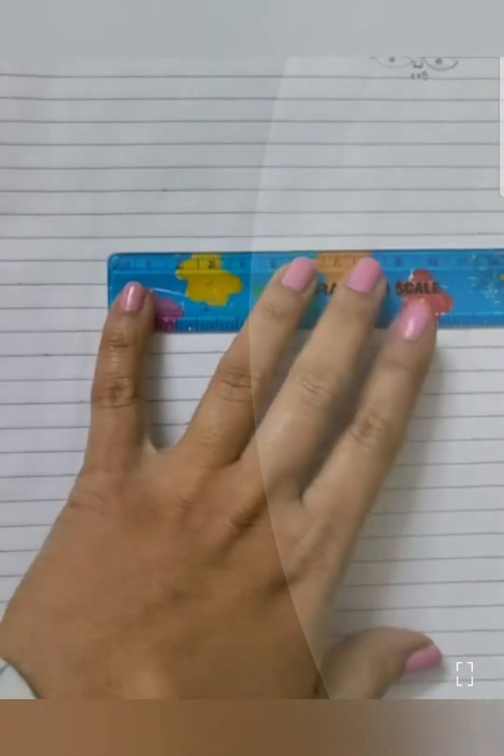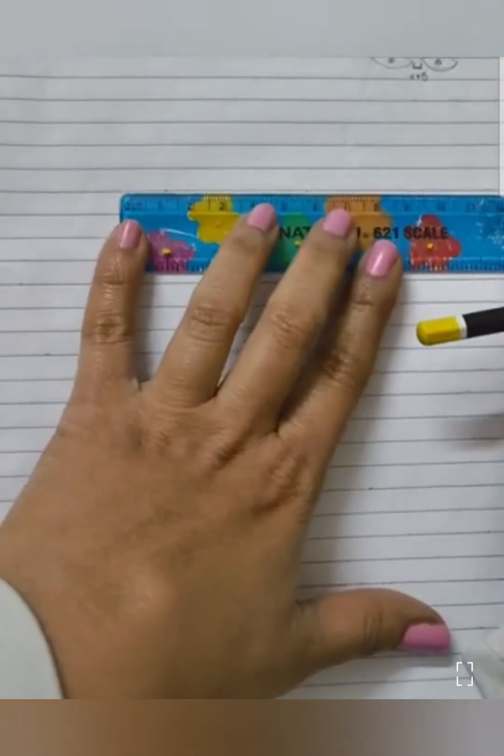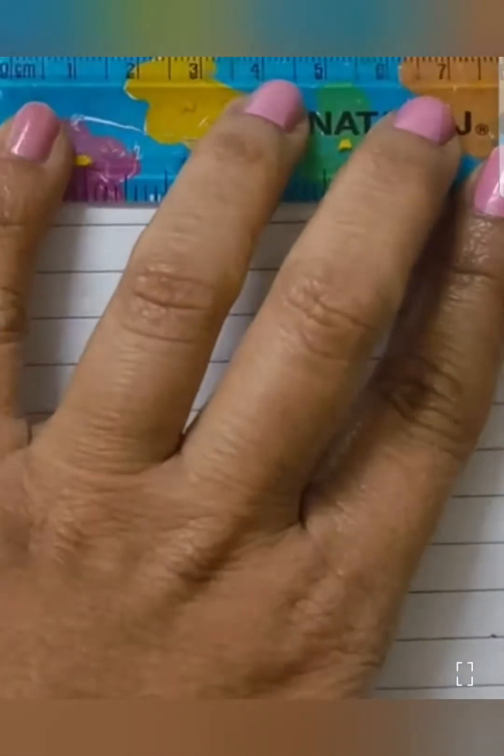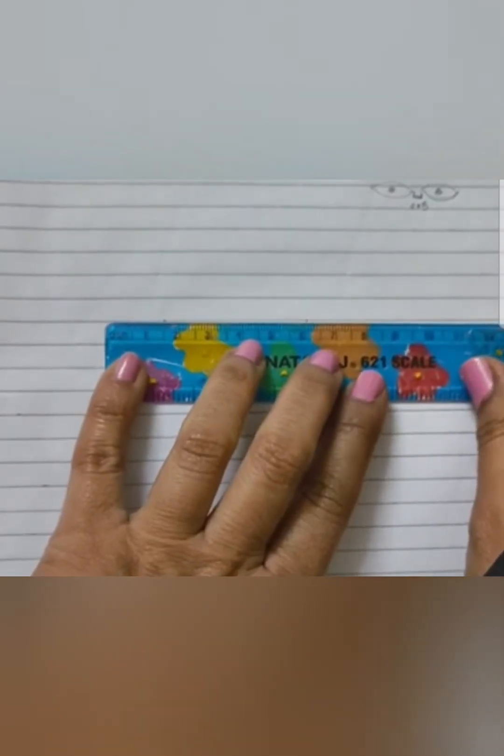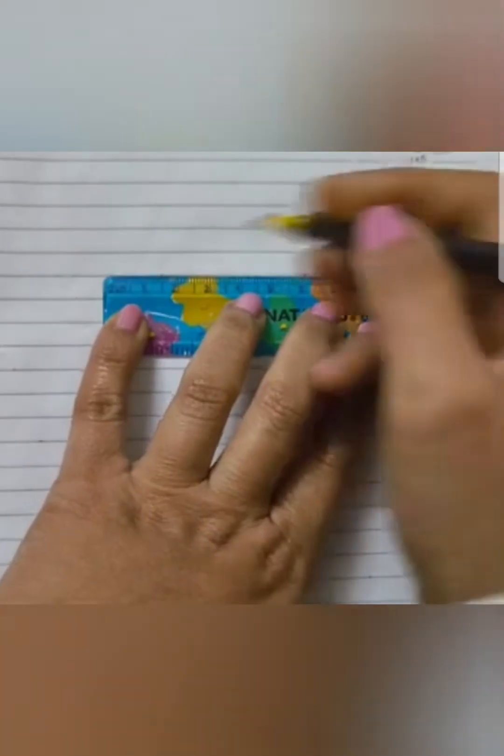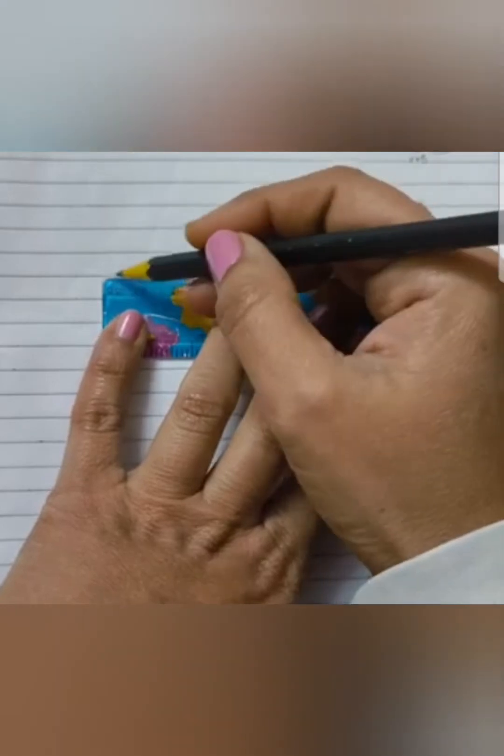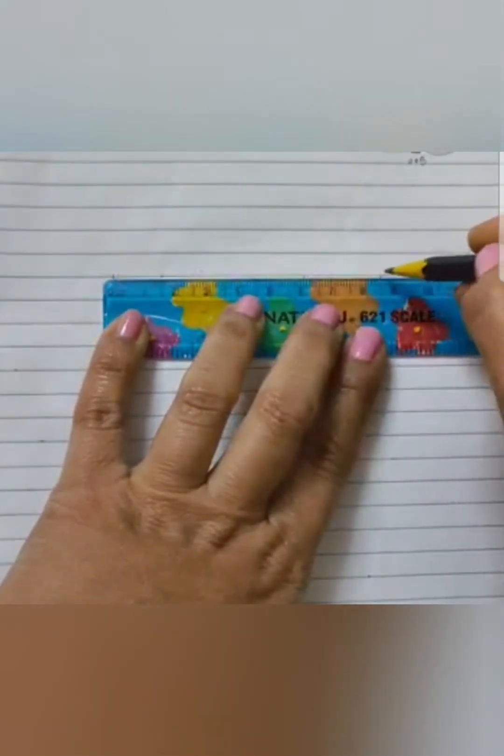To construct the eyes, I'm drawing a line segment such that the line should be divided into two eyes by leaving the gap. Taking 8.5 centimeters as the measurement, I am going to draw the line segment.